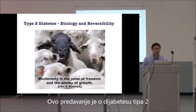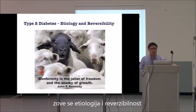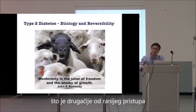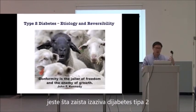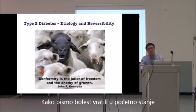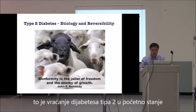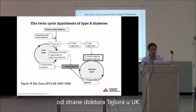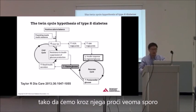This talk is about type 2 diabetes — specifically its etiology and reversibility. This is a whole different way we approach type 2 diabetes. The paper it comes from is called the Twin Cycles Hypothesis of Type 2 Diabetes, published in Diabetes Care by Dr. Taylor in the UK. It's quite complicated, so we're going to take it through very slowly.